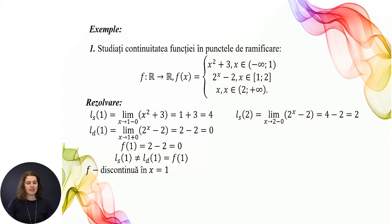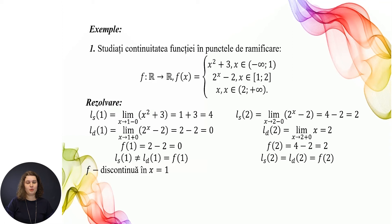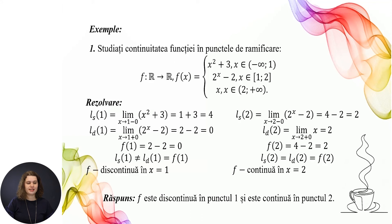Limita la stânga în 2: limita când x → 2⁻ a lui 2^x − 2, înlocuim x = 2 și obținem 4 − 2 = 2. Limita la dreapta în 2: limita când x → 2⁺ a lui x, înlocuim x = 2 și obținem 2. F(2) = 2. Observăm că toate trei valori sunt 2: limita la stânga în 2 = limita la dreapta în 2 = valoarea funcției în punctul 2. Deci f este continuă în x = 2. Răspuns: f este discontinuă în punctul 1 și este continuă în punctul 2. De menționat că în punctul 1, funcția este totuși continuă la dreapta, deoarece limita la dreapta este egală cu valoarea funcției în punctul 1.